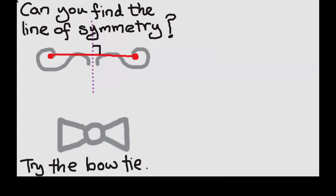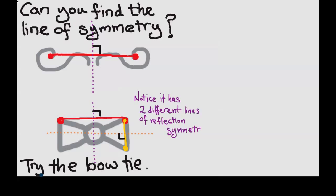Let's try the bow tie. In this case, there's a vertical line of reflection and a horizontal line of reflection. So it has two different lines of reflection symmetry.